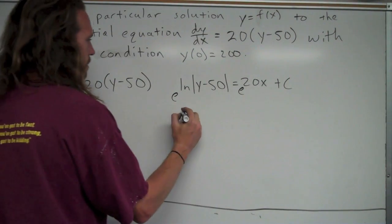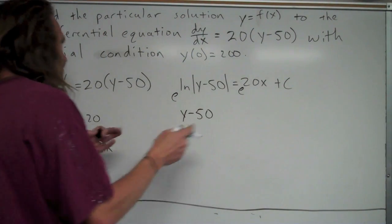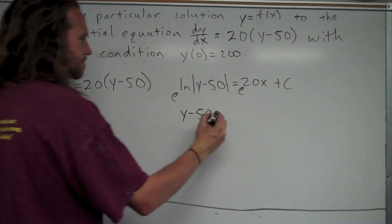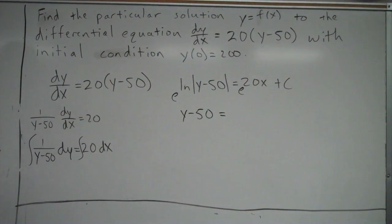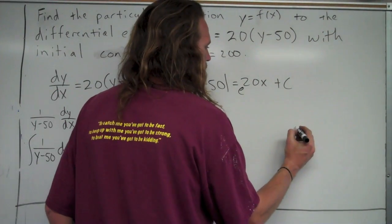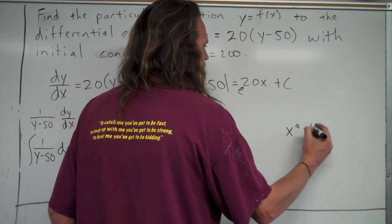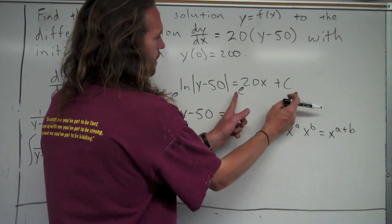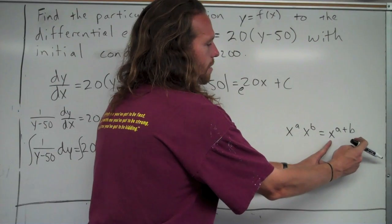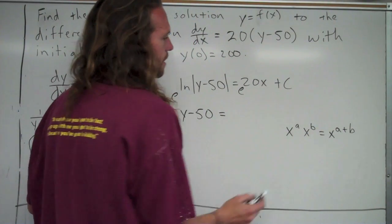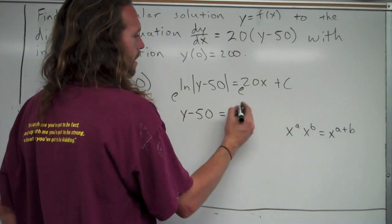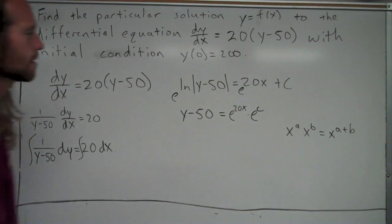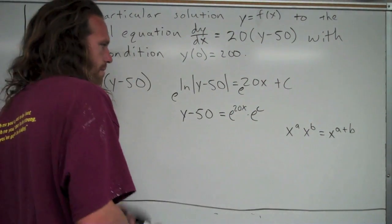e and ln are going to cancel each other out and just leave me with y minus 50. I'm dropping those absolute value signs because this value of c is going to take on the positive or negative, whatever it needs to be. On the right-hand side, I'm going to use exponent rules to rewrite this. I have e to the 20x plus c, so I'm going to write it as e to the 20x times e to the c.